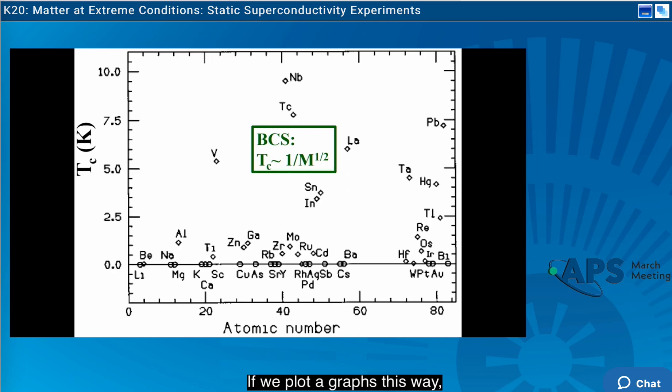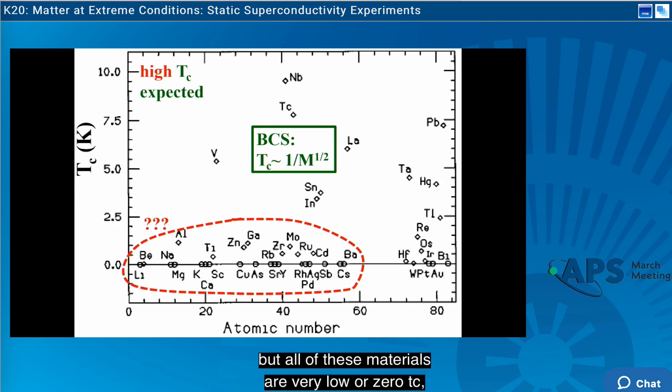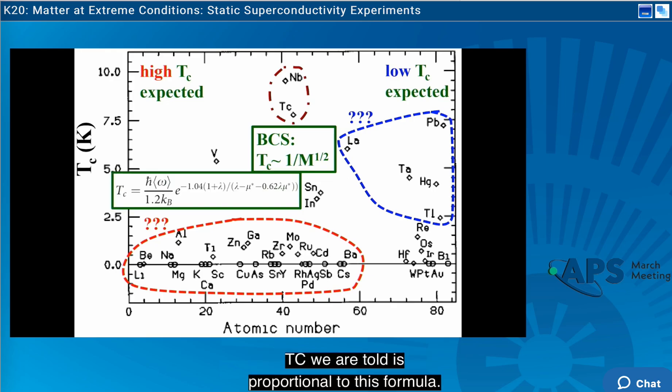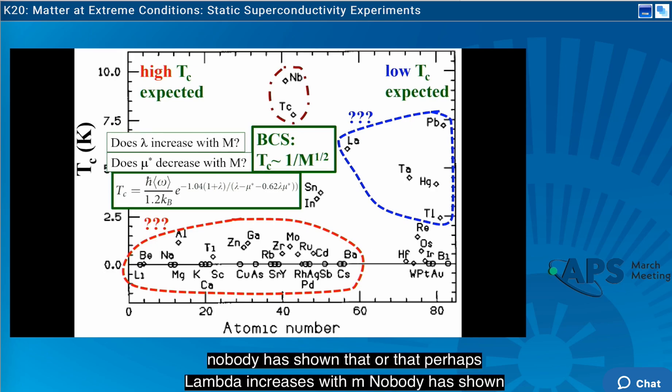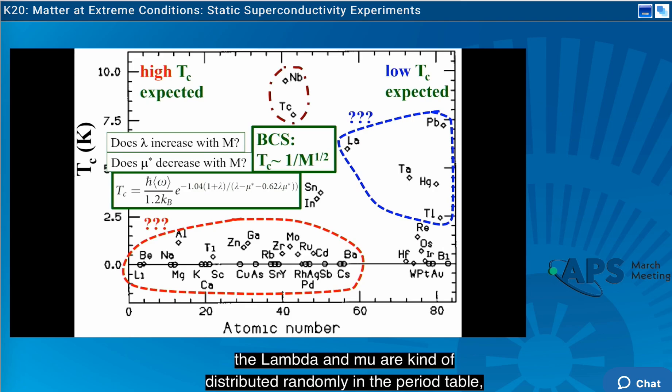If we plot a graph this way, high TC is expected for small atomic number, but all of these materials are very low or zero TC. Low TC is expected for high atomic numbers, but look at these materials that have high TC. Now, why could that be? And then the highest ones are kind of in the middle. TC, we are told, is proportional to this formula. And so you would have to assume that for some reason, mu star, the Coulomb pseudo potential, decreases with m. Well, nobody has shown that. Or that perhaps lambda increases with m. Nobody has shown that either. So if the lambda and mu are kind of distributed randomly in the periodic table, you should see some correlation between the mass and the TC, and you see none.